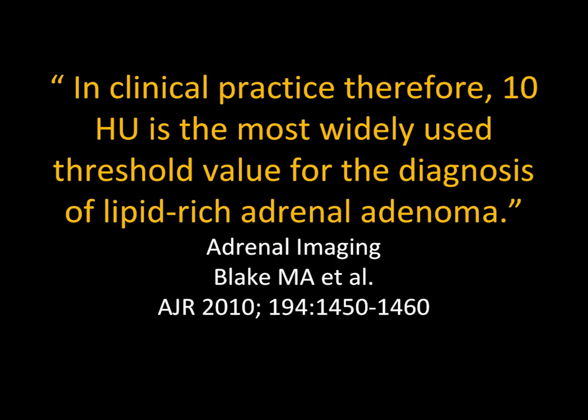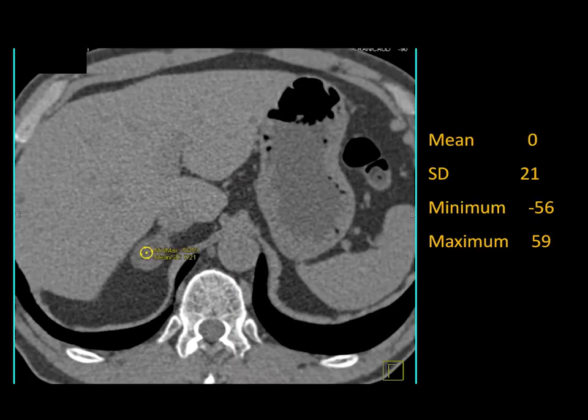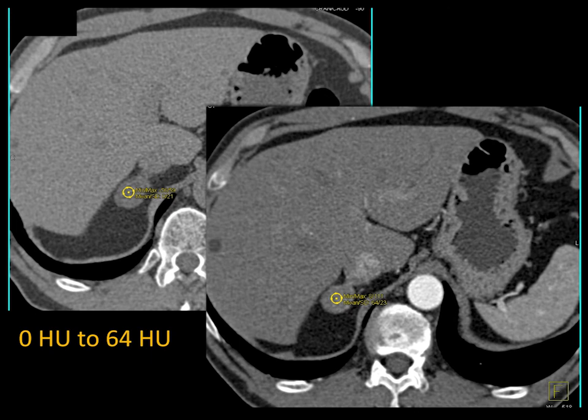Under 10 Hounsfield units, it's an adenoma. Under 4cm and under 10 Hounsfield units — stop, there's no reason to go further. In one case, the attenuation is zero — a very nice adenoma. We go with the mean attenuation, just over 1cm. Very simple.